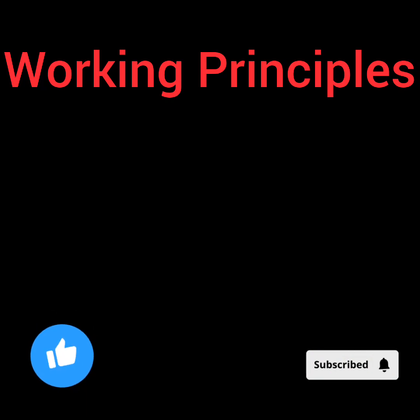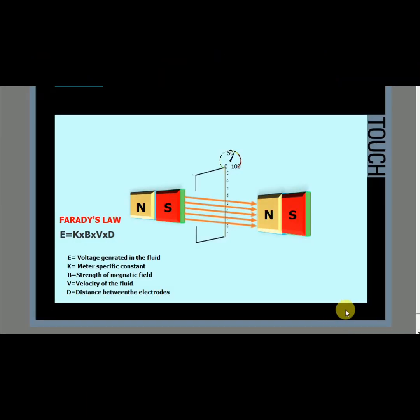Faraday's law. In 1831, Michael Faraday observed that a voltage is induced across any conductor as it moves at right angles through a magnetic field and that the voltage is proportional to the velocity of that conductor. This is called Faraday's law of electromagnetic induction. To generate a voltage according to Faraday's law, we must have a moving conductor. What is the conductor in our flow application?